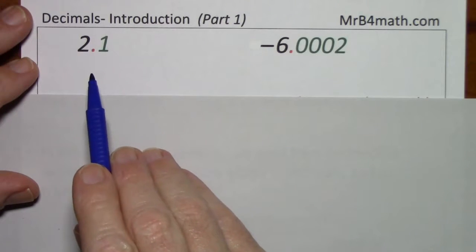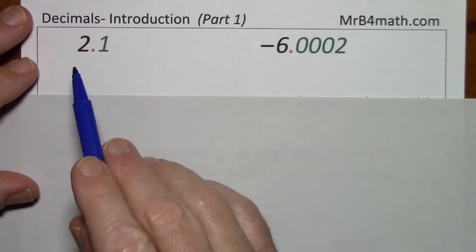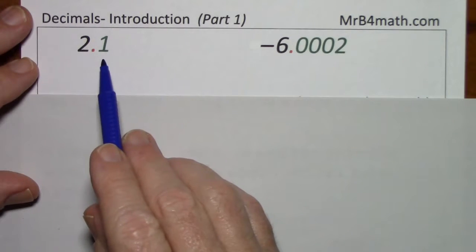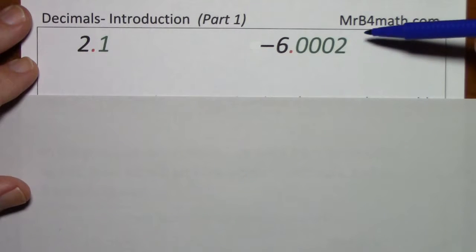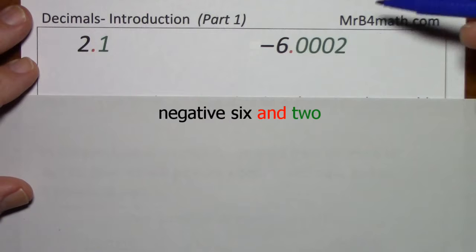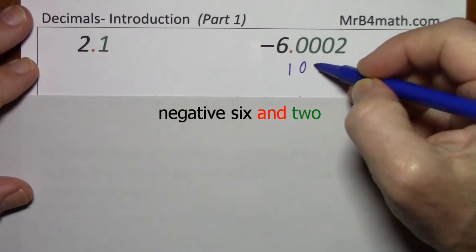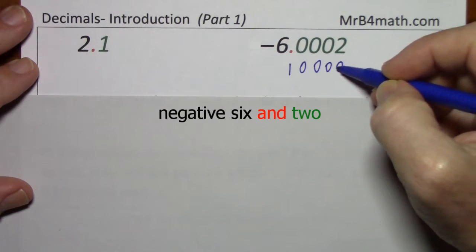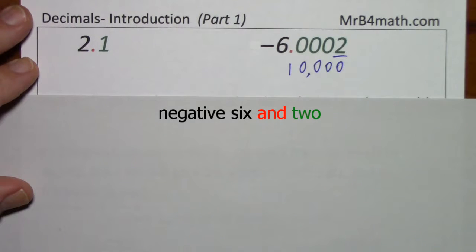I'll cover two more examples going from number to words. This is two and one-tenth. Over here, negative six and two ten thousandths.